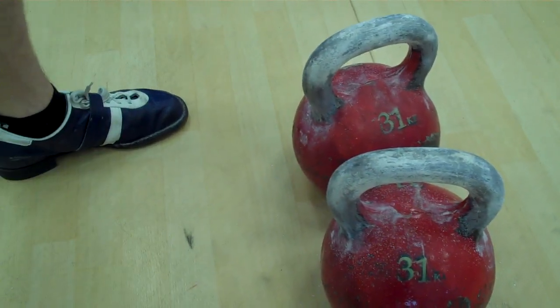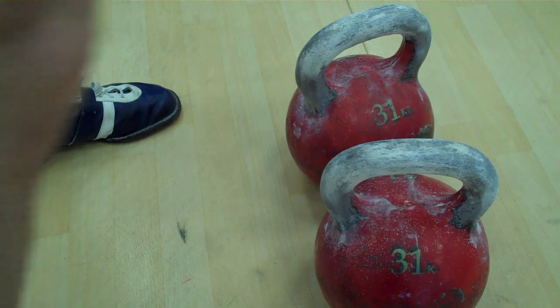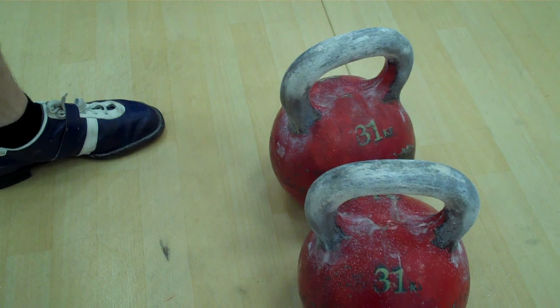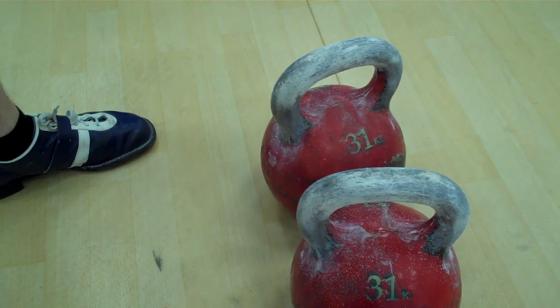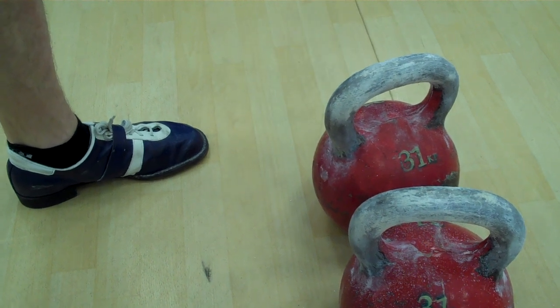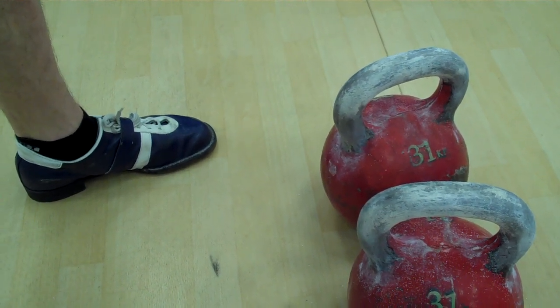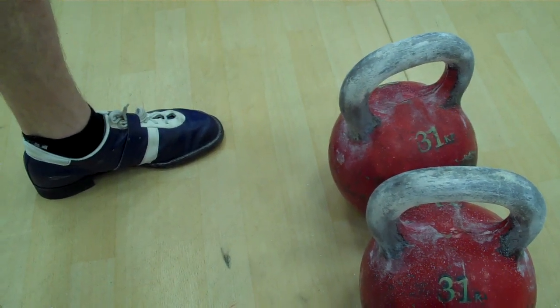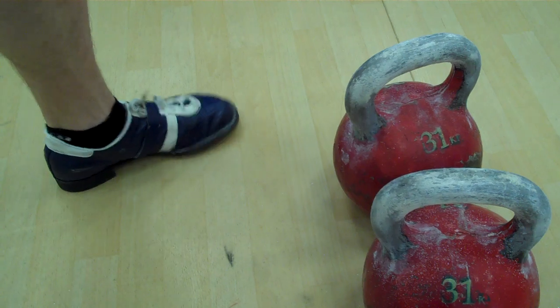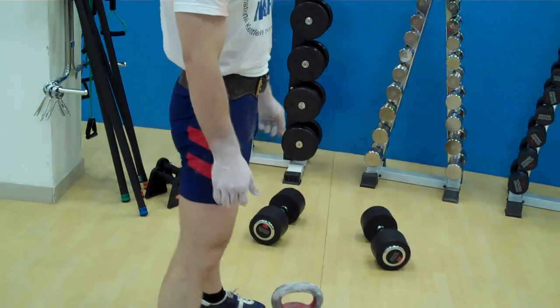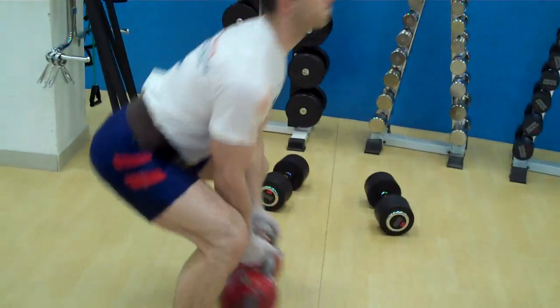Dennis has now done three short warm-up sets, getting the feel of the rack. Now he's going to do a four-minute set, and during that four minutes he's going to start out at about seven reps a minute and build up to probably eight, nine, and maybe ten or eleven reps a minute. I will be counting out the reps per minute as he goes. Five, four, three, two, one, begin.